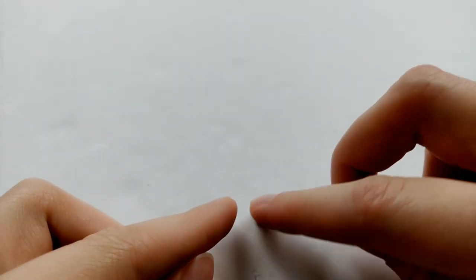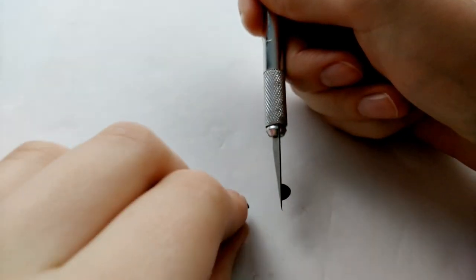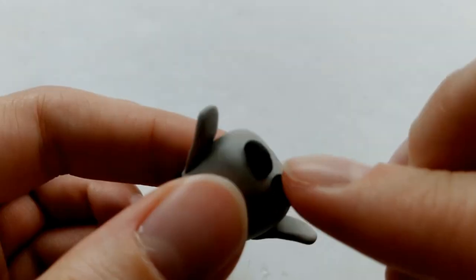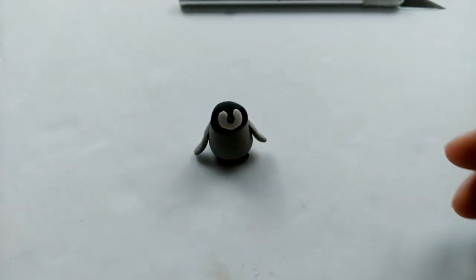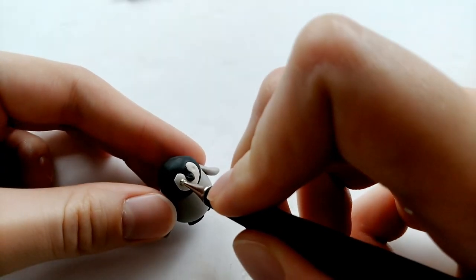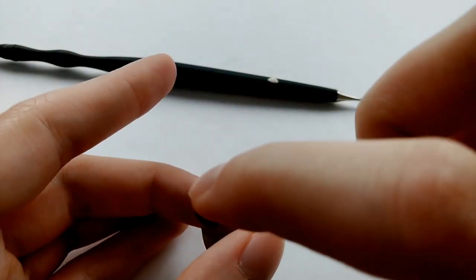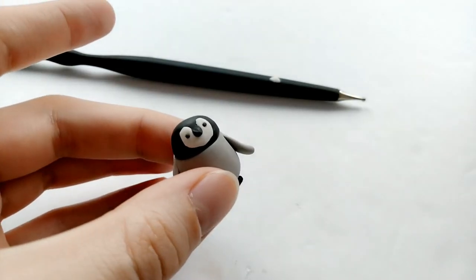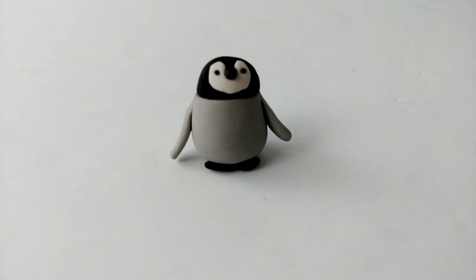For the feet, we're taking a small ball of black clay, flattening it, and cutting it in half. And those will just be our feet, our flippers. And make two indents on the face and add little black balls for the eyes. And this is our finished penguin. And this is it after baking.